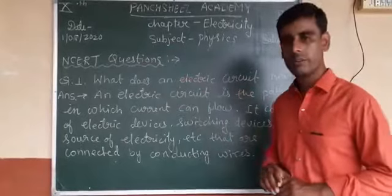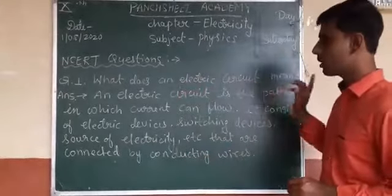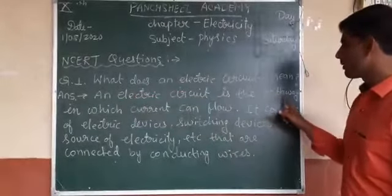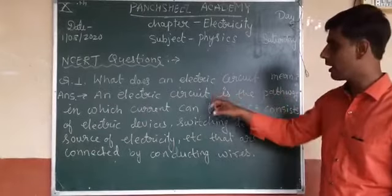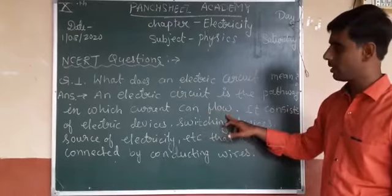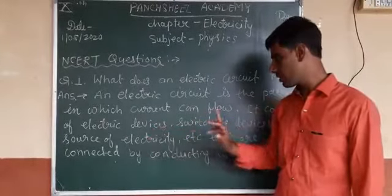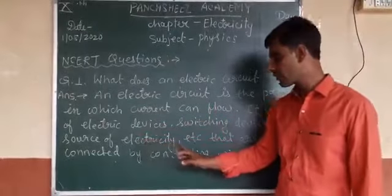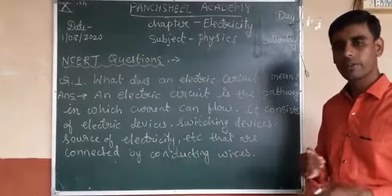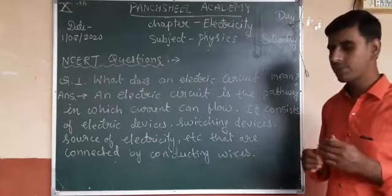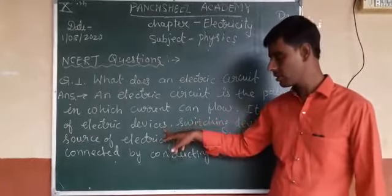First question: what does an electric circuit mean? An electric circuit is the pathway in which electric current can flow. It consists of electric devices, switching devices, and source of electricity, connected by conducting wires. Another definition: an electric circuit is the combination of circuit elements such as resistors, voltage sources, and switches.